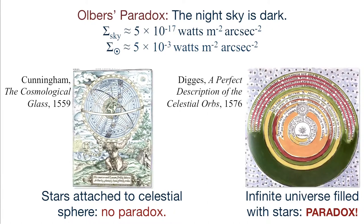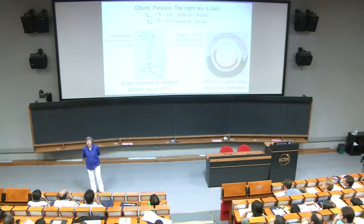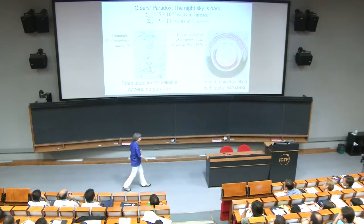It's commonly stated that the hot Big Bang model has a foundation made up of three observations: Olbers' paradox, Hubble's law, and the cosmic microwave background. Olbers' paradox is simply the statement that the night sky is dark. It's named after Friedrich Olbers, who wrote quite a long paper about the darkness of the night sky in 1823. However, Olbers was neither the first person to worry about the darkness of the night sky, nor the first to give a correct explanation. In science, names sometimes get arbitrarily attached.